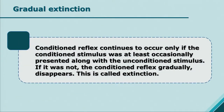The first process is gradual extinction. The conditioned reflex action in classical conditioning continues only if we repeat the trials. Once the trials are discontinued, the conditioned reflex gradually disappears. For example, Pavlov's dog learnt to salivate at the sound of the bell because food and bell were given together. But if you stop associating the bell with the food, gradually salivation at the sound of the bell will stop. This is called gradual extinction.